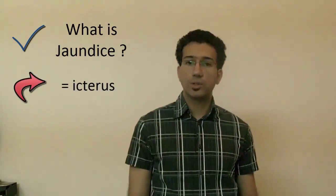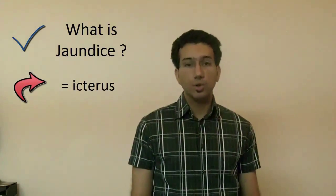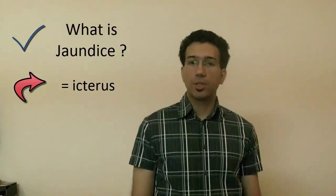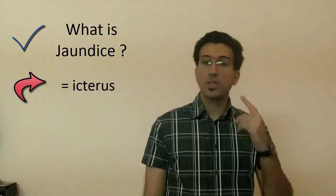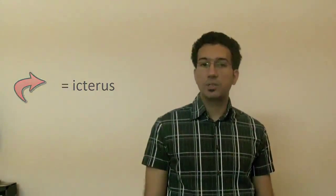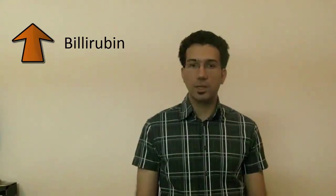Jaundice is also called Icterus. Icterus or Jaundice is a yellowish discoloration of the skin, the sclera and mucous membranes, and is due to hyperbilirubinemia and its accumulation in tissues which are rich in elastic fibers.